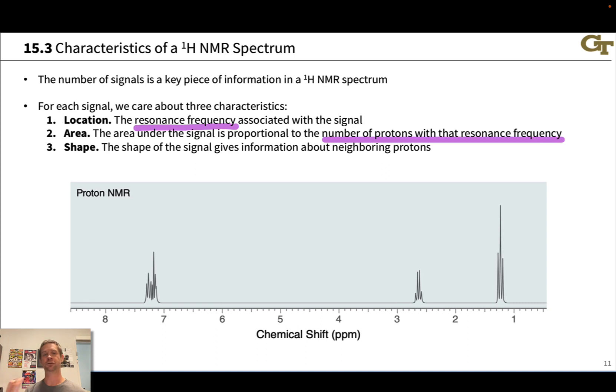And third, we've got the shape. The shape of the signal refers to the number of sub-peaks within each signal. You'll notice that each NMR signal is not just one peak. It's a collection quite frequently of multiple peaks showing up clustered together. The shapes of these clusters actually give us detailed structural information about nearby protons. And it's actually very powerful information for elucidating molecular structure.